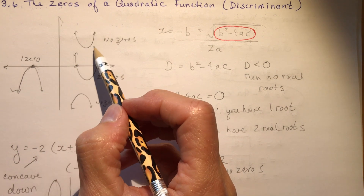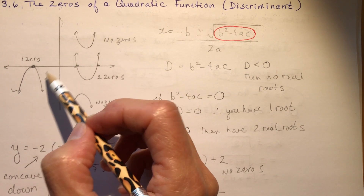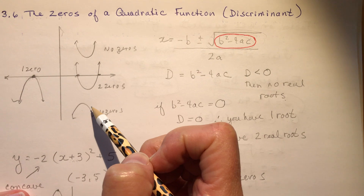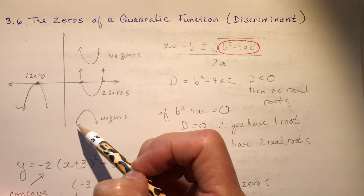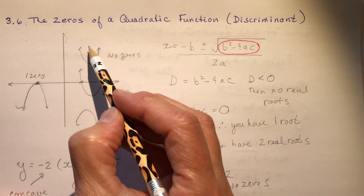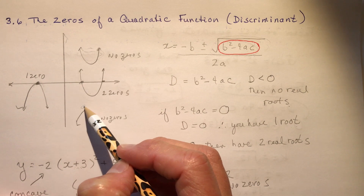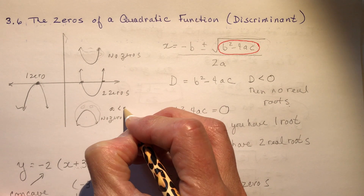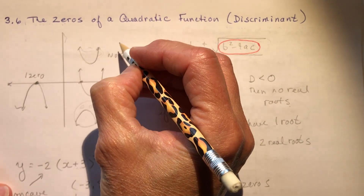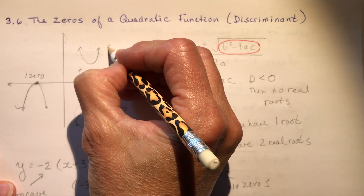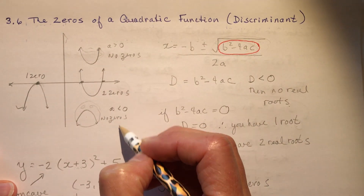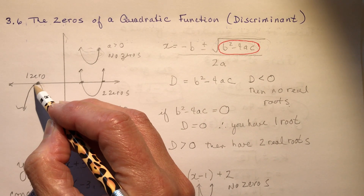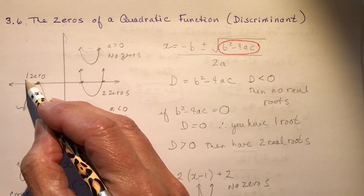I started off by explaining how a parabola can sit on a coordinate plane and how the way it sits tells you how many zeros it has. If a parabola is concave up — remember the saying 'concave up holds the cup, concave down makes a frown' — that means a is greater than zero. Concave down means a is less than zero. It can cross the x-axis in two places, or just kiss it at one point and come back down, giving one zero.